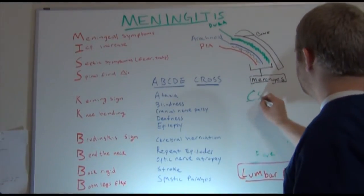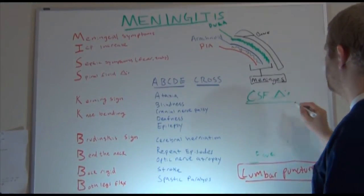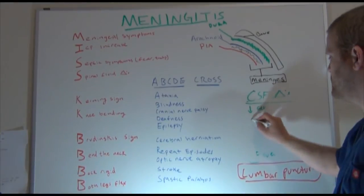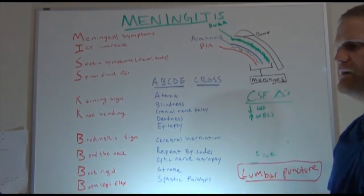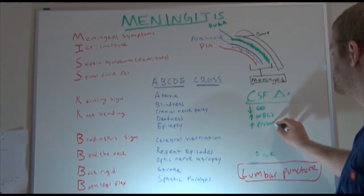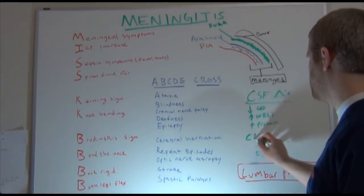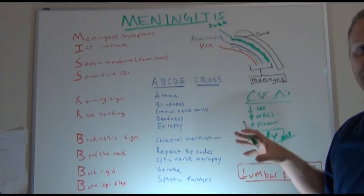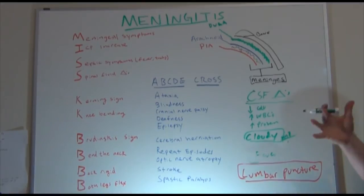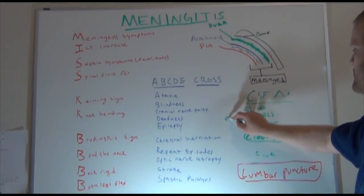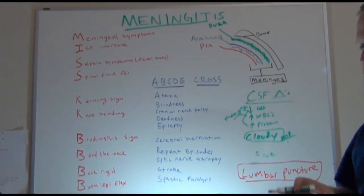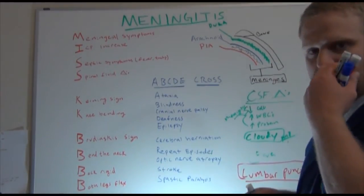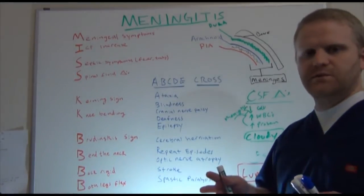The things they're going to look for in that CSF to help diagnose meningitis are specific CSF changes: low glucose, increased WBCs, and increased protein. They might also notice that the CSF itself is actually cloudy or pink. Specifically, the lab is going to tell us that glucose is down, white blood cells are up, and protein is up. Those signs together are going to help diagnose meningitis. They'll also check general labs and do scans to see if there's any swelling in the brain.